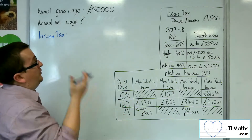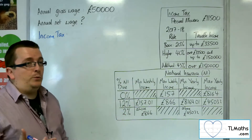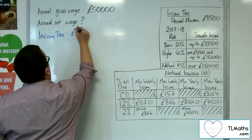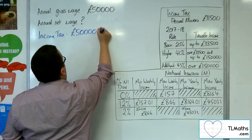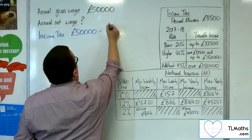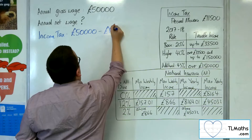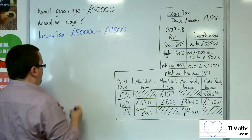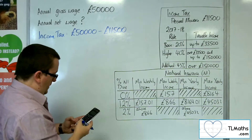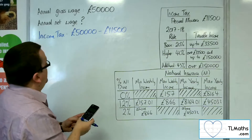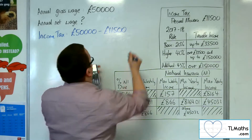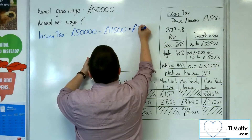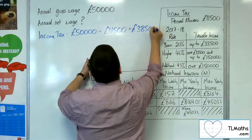The first thing we need to do is subtract the personal allowance from the £50,000. So £50,000 take away £11,500 gets me £38,500.